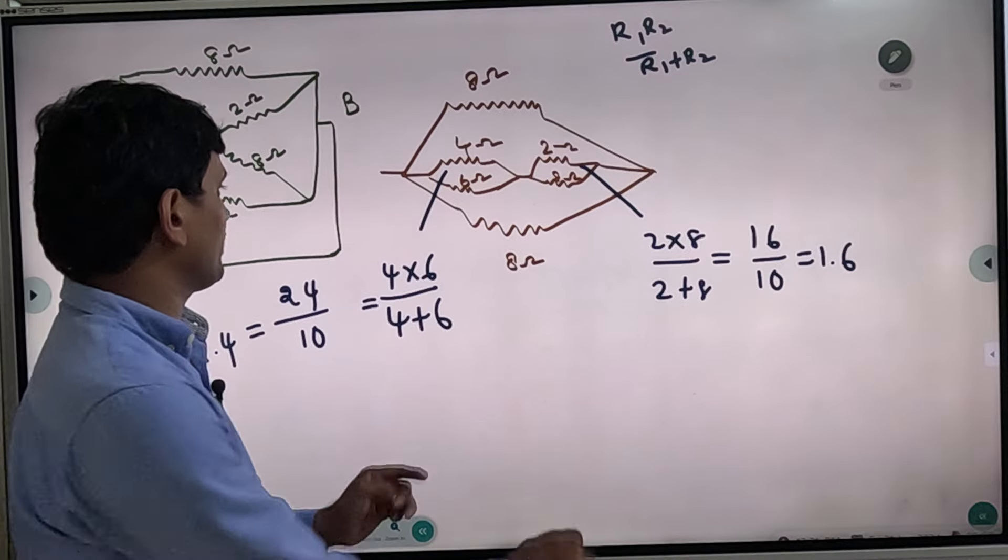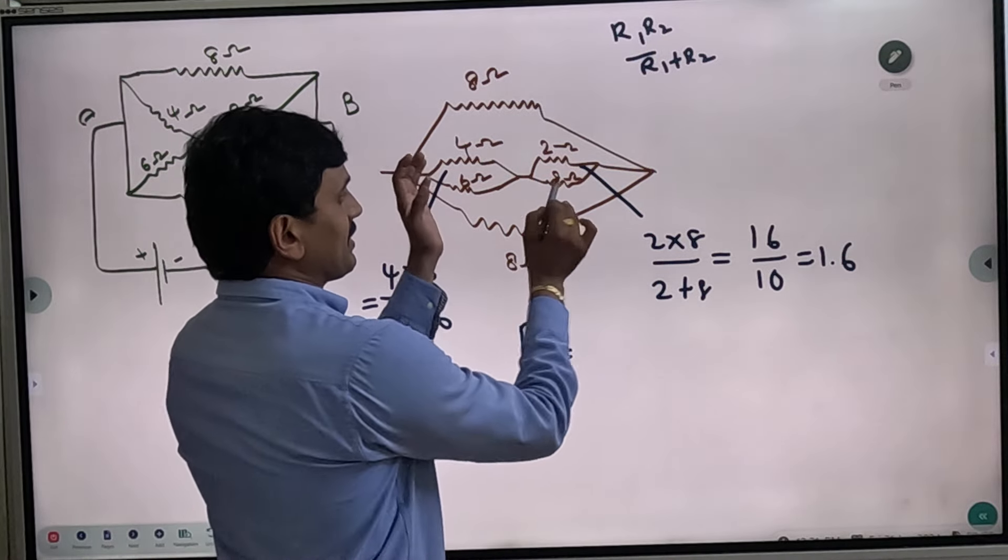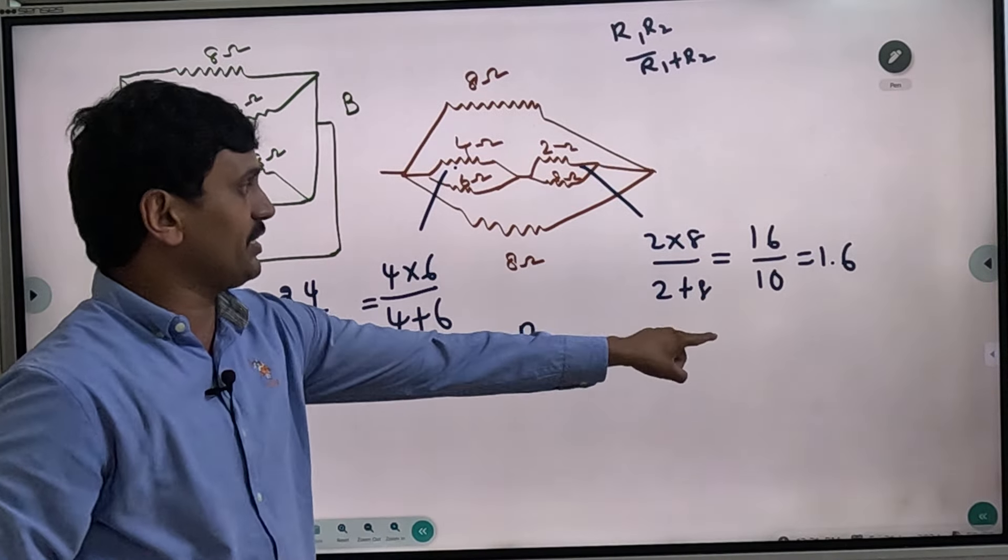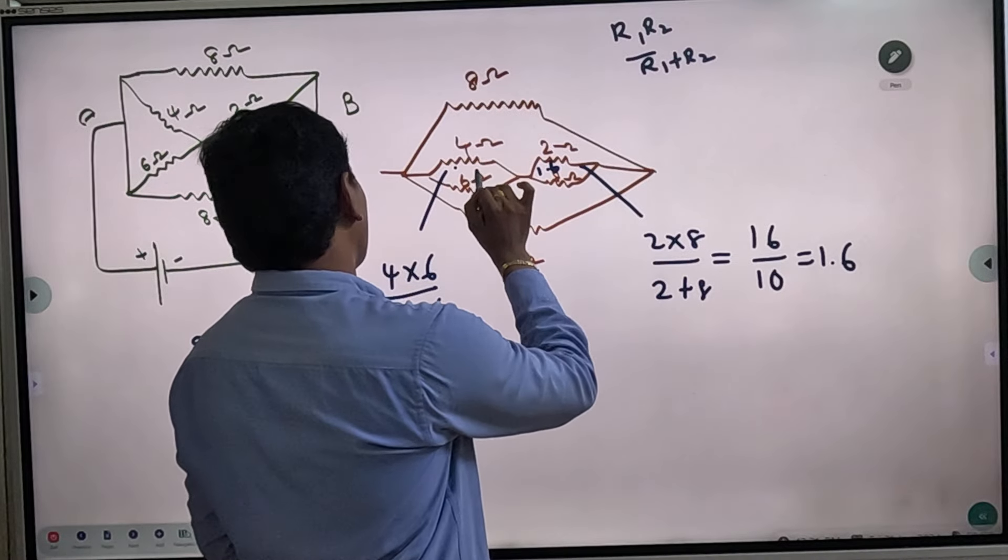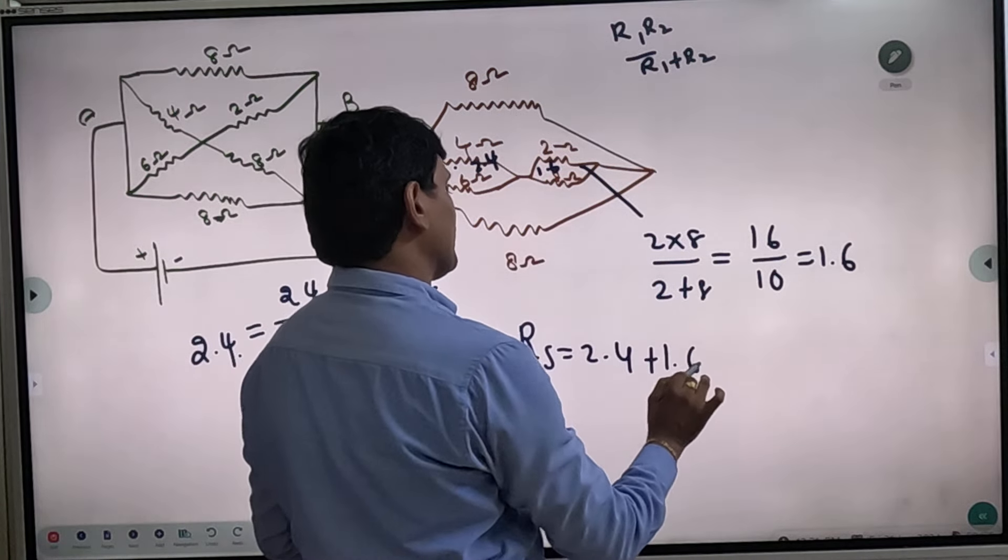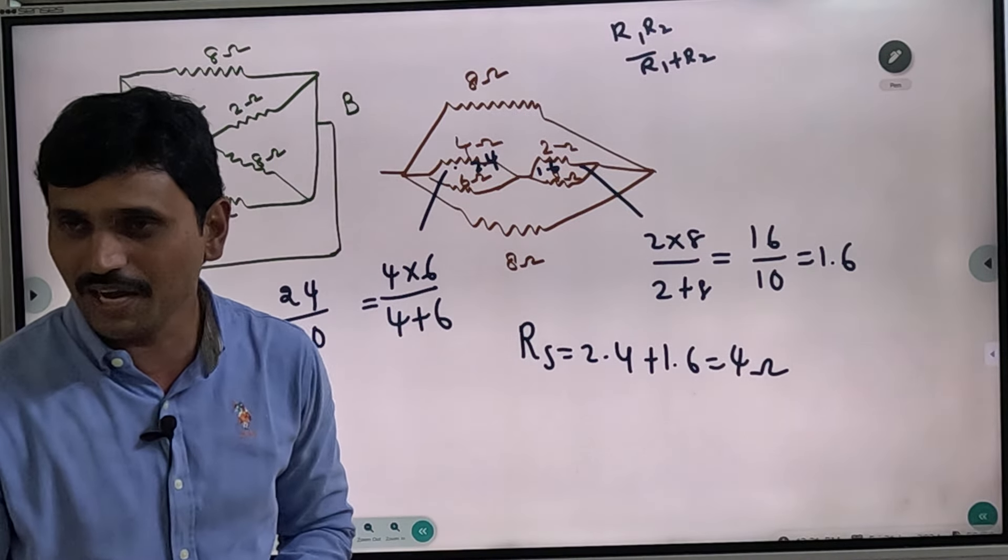Now, what is the series resistance? Like the parallel, the value is 2.4 and 1.6. Now is it 2.4 plus 1.6? 4 ohms. That's the answer.